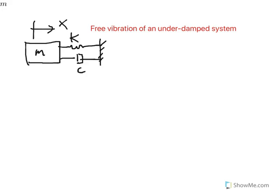Hello again. Today I want to show you a system — a typical mechanical system consisting of a mass, a spring, and a damper. This would be a case of free vibration, so there is no force acting on the mass. The system is going to be disturbed by giving it an initial position and initial velocity.